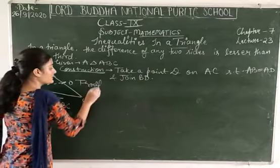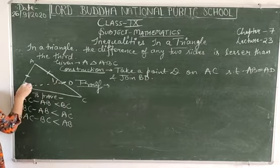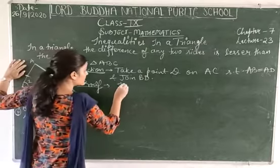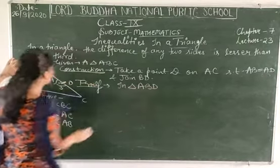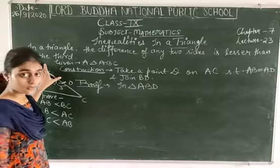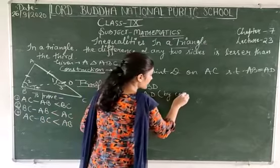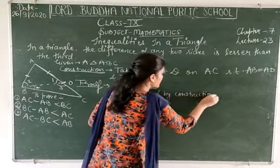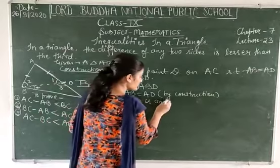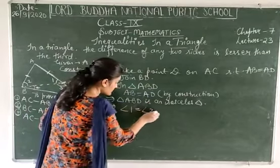Now, let's name all the angles. Let angle 1 be at vertex A in triangle ADB, angle 2 be angle ADB, angle 3 be angle BDC, and angle 4 be angle DBC. Clearly, in triangle ADB, since AD equals AB by construction, triangle ADB is an isosceles triangle. Therefore angle 1 equals angle 2.